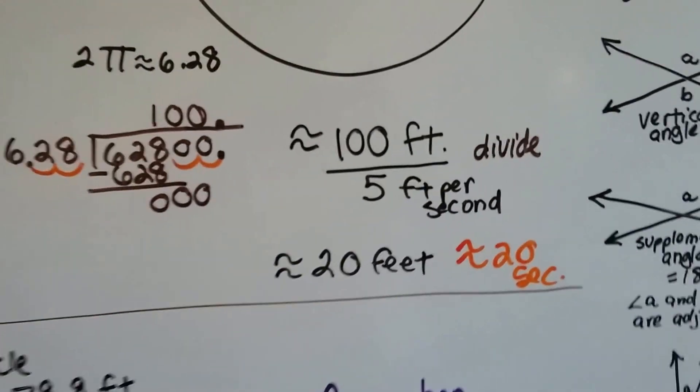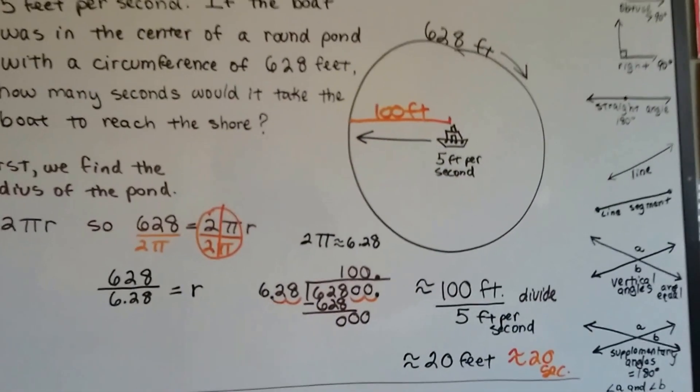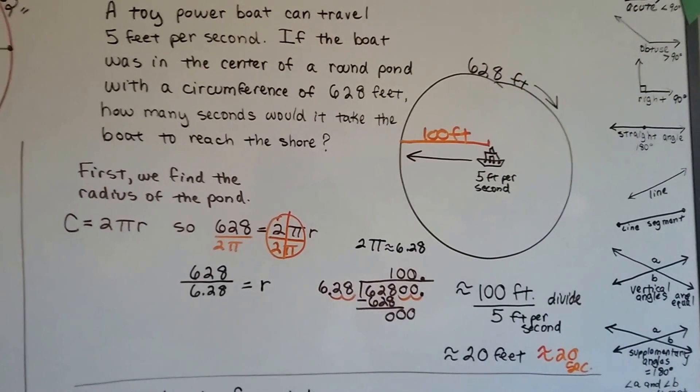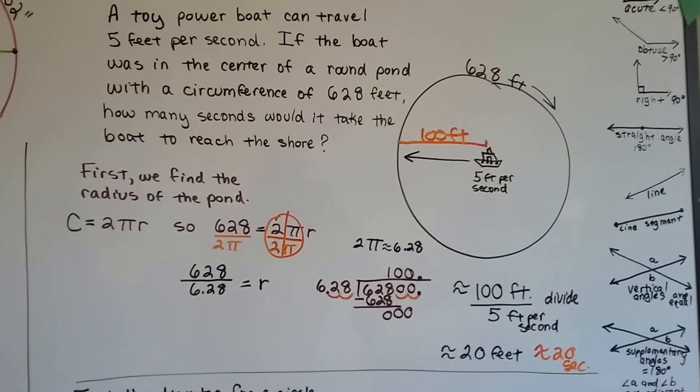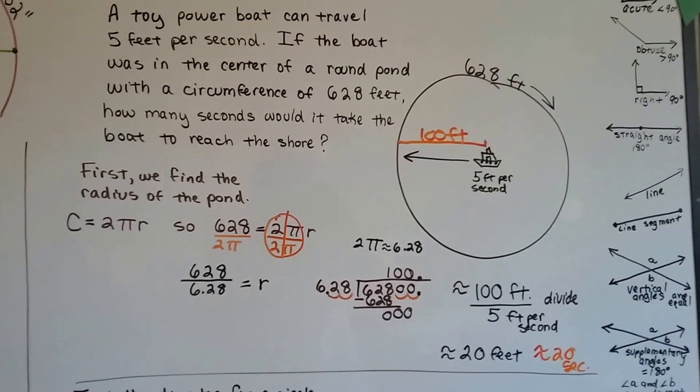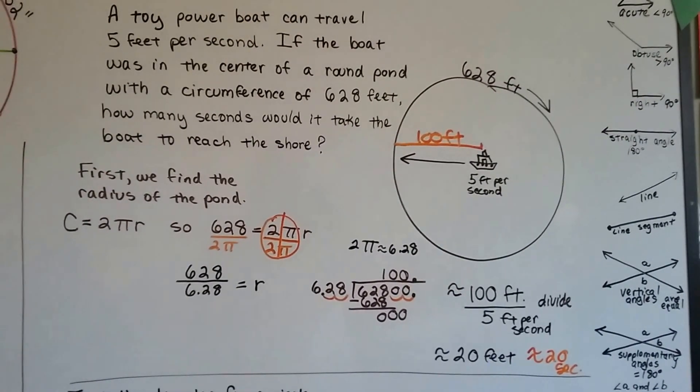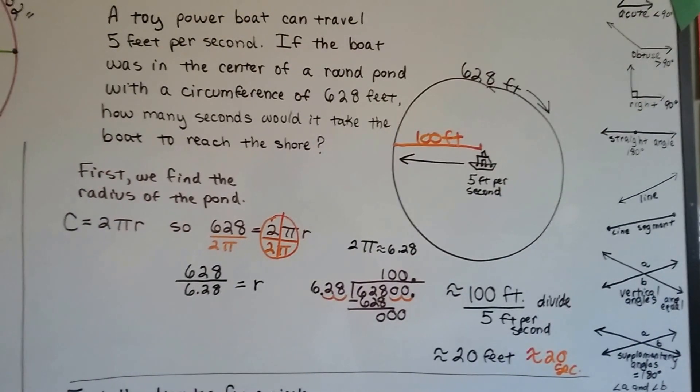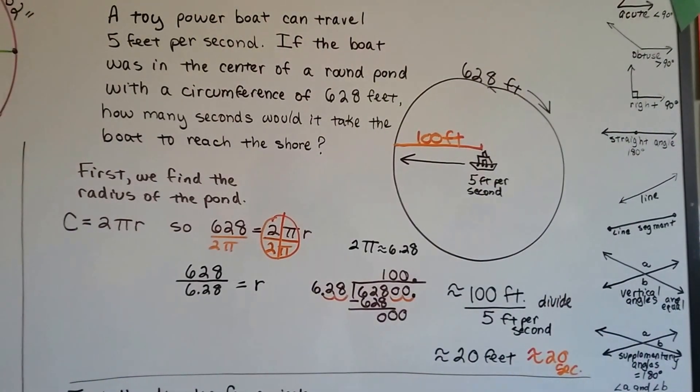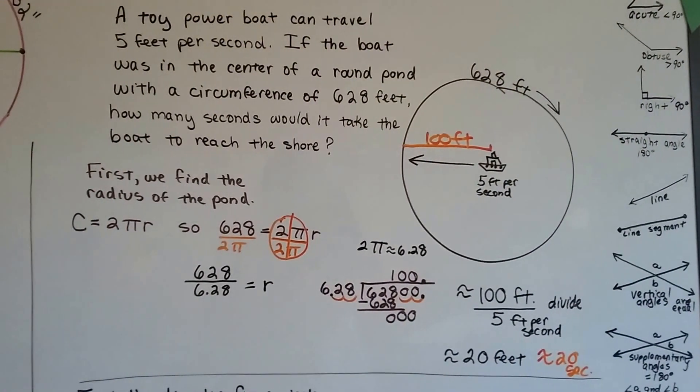Well, quite a few steps to that problem, weren't there? But do you see how I got it? I just slowly chipped away at it piece by piece. We had to find the radius first. Then we had to divide the radius that we found by the 5 feet. And then we just figured per second. So it's 20 seconds.